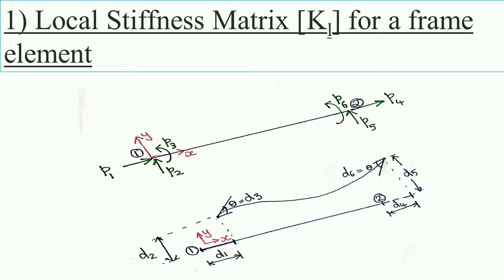In member 1-2, at node 1 the three forces are P1, P2, and P3, where P1 is the axial force, P2 is the shear force, and P3 is the moment. Similarly, at node 2 the forces are P4, P5, and P6. Displacements at node 1 are D1, D2, and D3, and at node 2 are D4, D5, and D6.